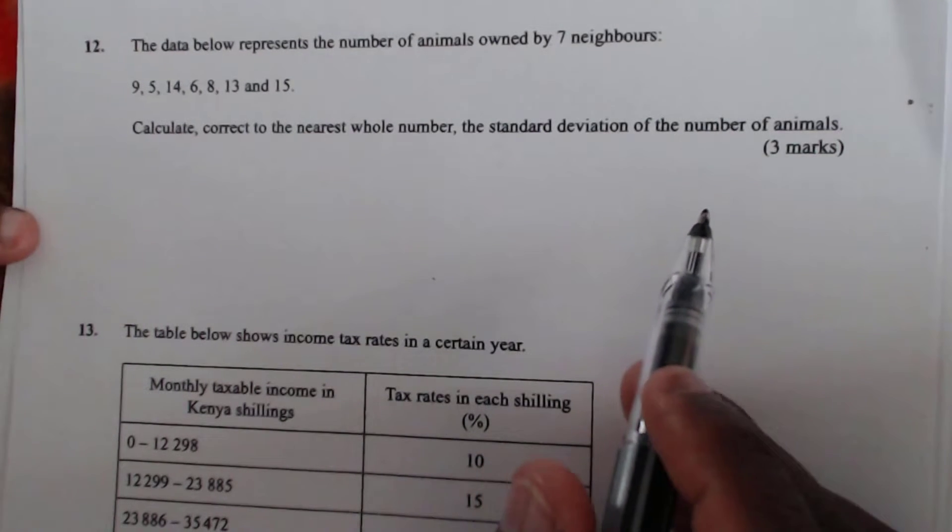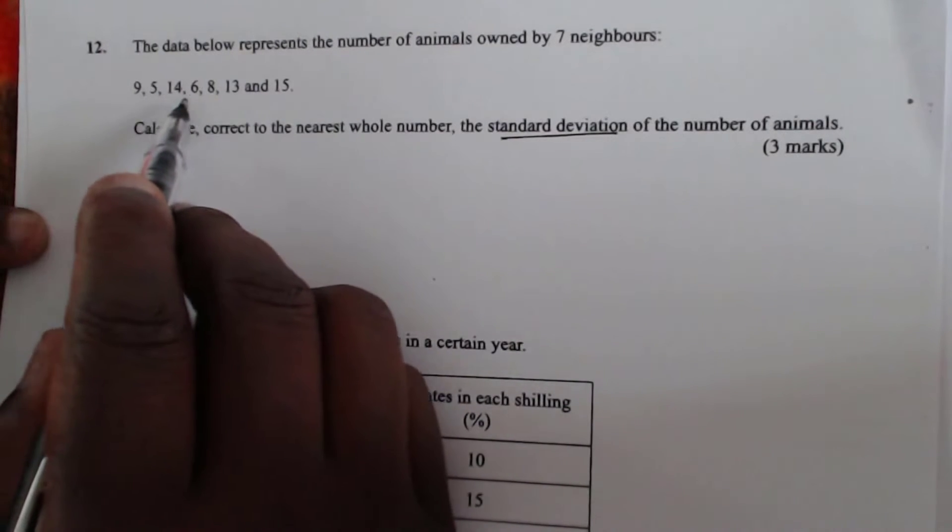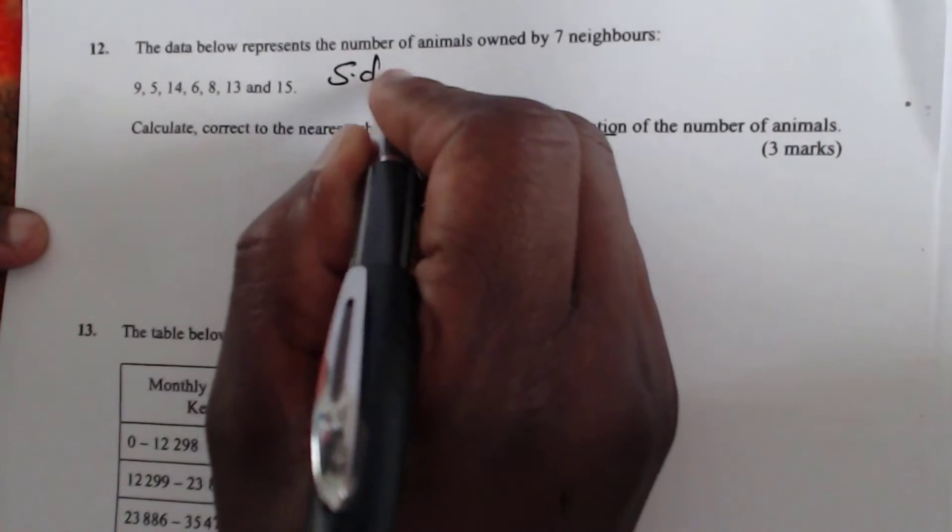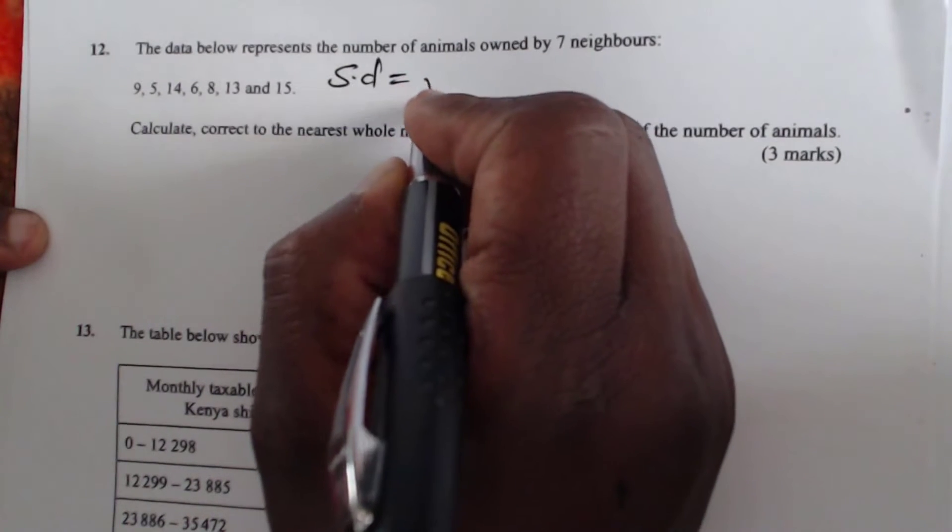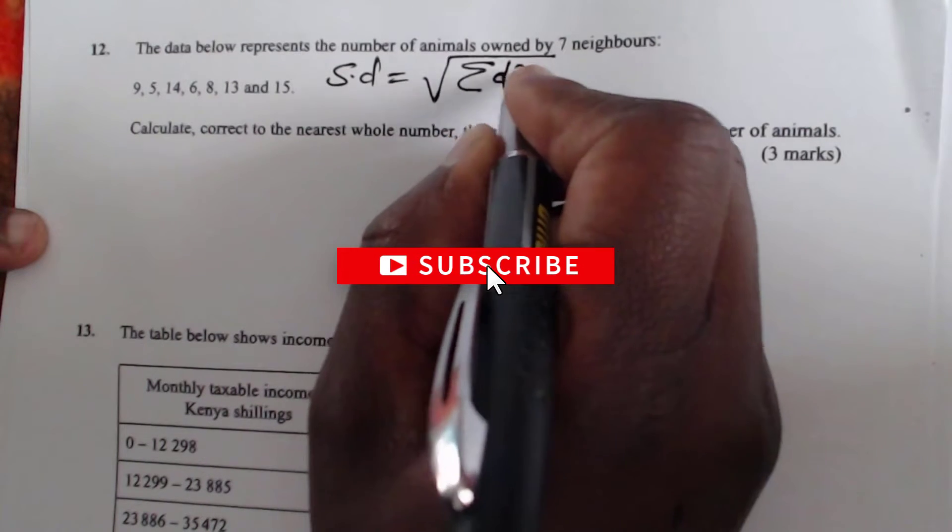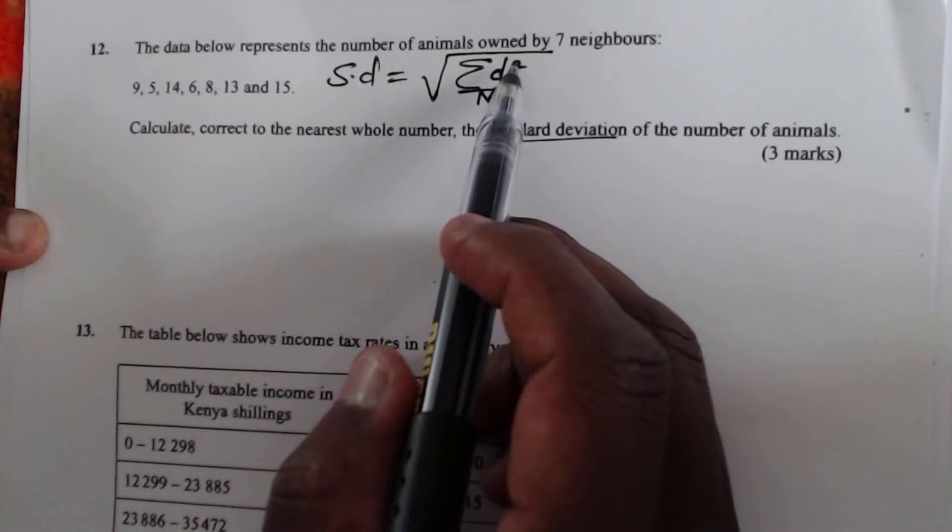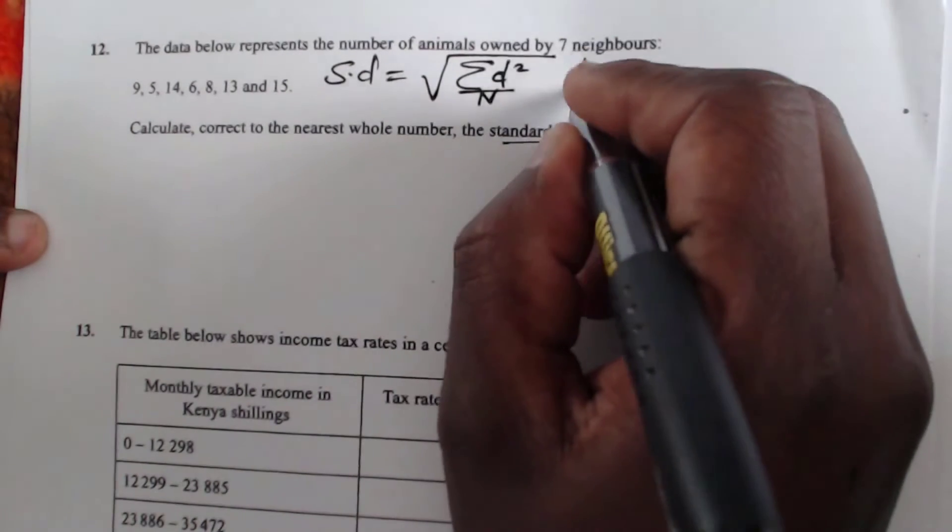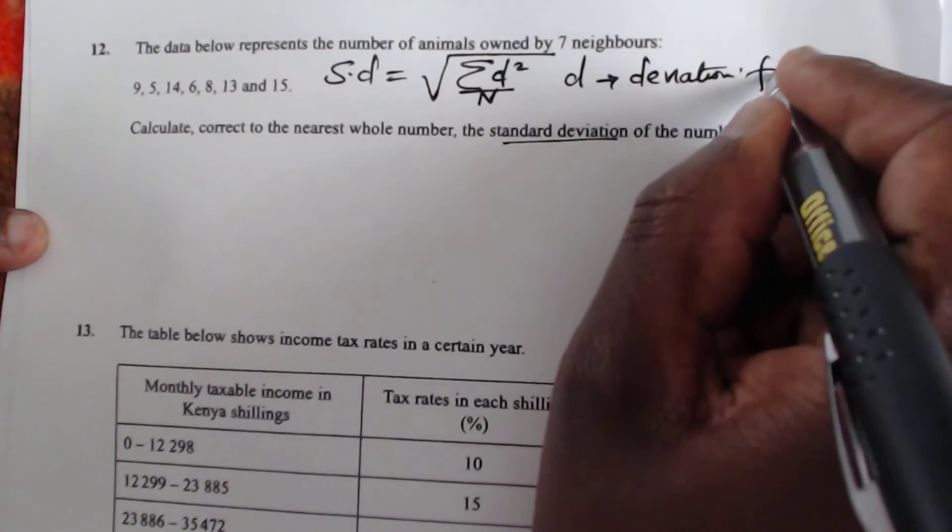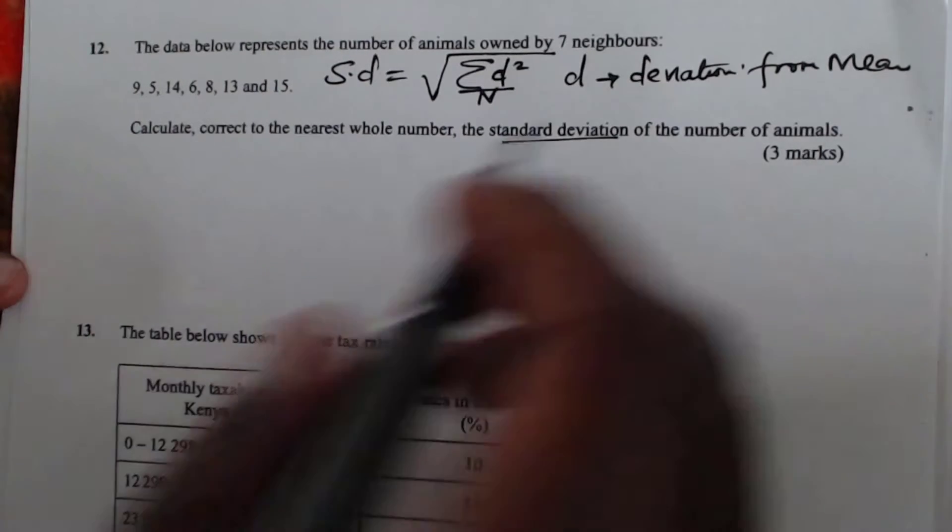Now we need to know how do you calculate the standard deviation of this kind of data, ungrouped data. This is ungrouped data. To get the standard deviation of the ungrouped data, we get it by this formula. Standard deviation is equal to the square root of the summation of deviation squared divided by n. D is the deviation from the mean.